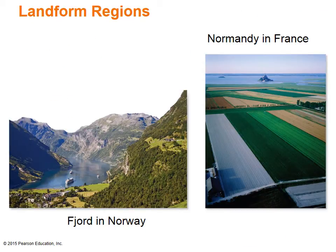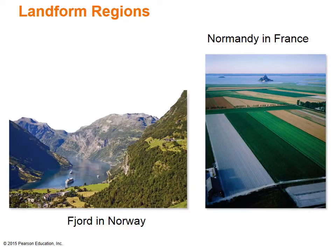The photo on the left depicts the majestic fjords of Norway, part of the western highlands. Millions of years ago, continental ice sheets and glaciers carved deep U-shaped valleys along Norway's coastline. As ice sheets melted and sea levels rose, these valleys were flooded, creating spectacular fjords. Many fjord settlements are accessible only by boat, linked to the outside world by Norway's extensive ferry system. The photo on the right depicts the fertile European lowlands in the Normandy region of western France, where numerous rivers drain interior Europe, giving rise to large port cities.